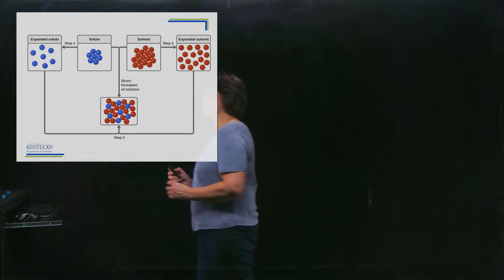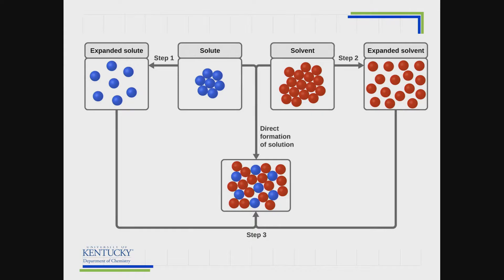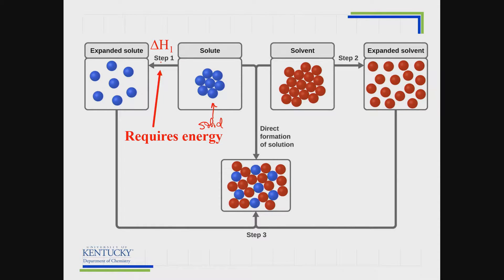Let's look at what's happening on the molecular level. With pure solute, the molecules are sitting right next to each other — imagine this is a solid. In order to get the solvent molecules around those solid molecules, we have to pull the solute apart, and that requires energy for step one. Similarly, the solvent is a liquid with no room for solute molecules, so the solvent molecules must also be pulled apart, which also requires energy.